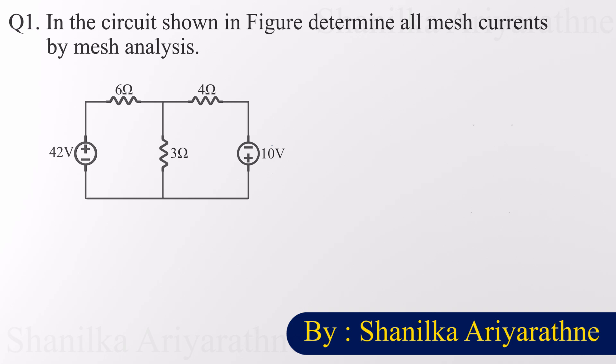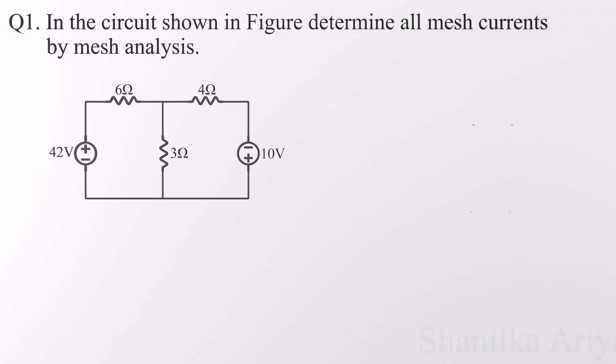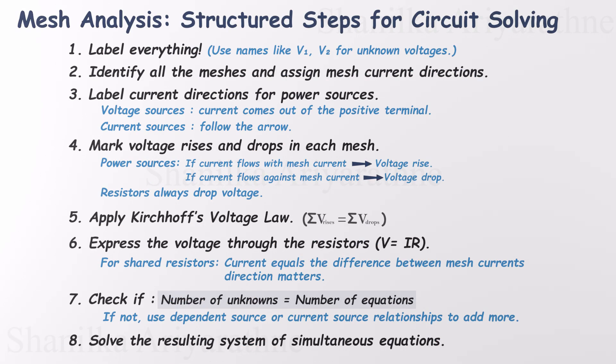We need to determine all the branch currents using mesh analysis. This circuit has two voltage sources, and that's it. No current sources, no dependent sources, and no tricky supermeshes. So if you're new to mesh analysis, this is a great beginner-friendly example to work through. We'll walk through the entire process in eight simple steps.